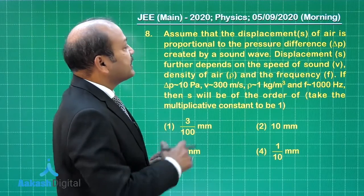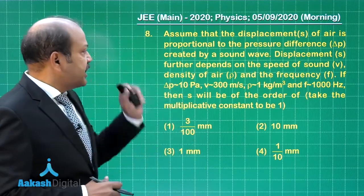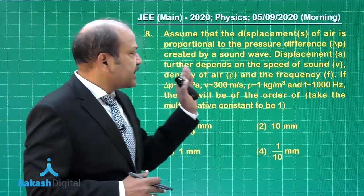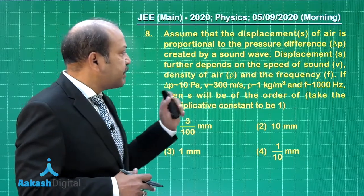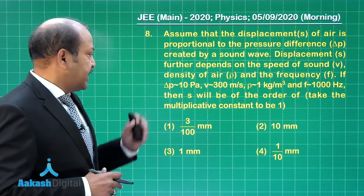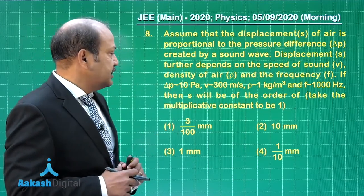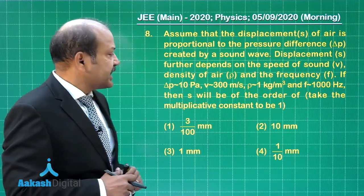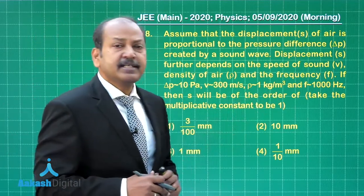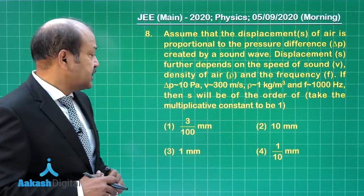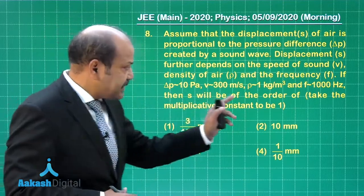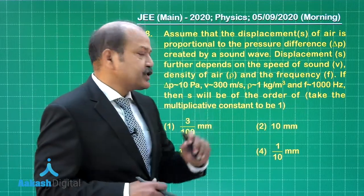Question 8 says assume that the displacement s of air is proportional to the pressure difference Δp created by a sound wave. Displacement s further depends on the speed of sound v, density of air ρ and the frequency f. If Δp is 10 Pascal, v is about 300 meter per second, ρ is nearly 1 kg per cubic meter and the frequency is nearly 1000 hertz, then s will be of the order of, and the 4 options are given. It specifically mentioned that take the multiplicative constant to be 1.